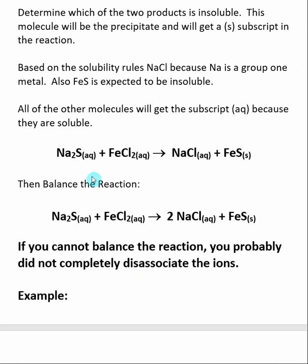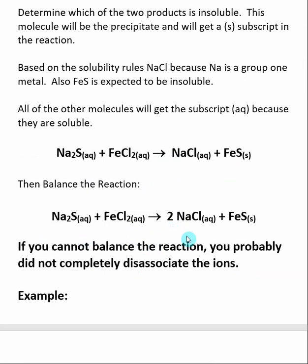The next step is to balance the reaction. We have taken our reactants, recombined them to make products, and now we balance. Here, all we need to do is place a stoichiometric coefficient of 2 in front of sodium chloride. We have discussed how to balance these reactions in previous sections. One thing to remember: if you have trouble balancing and it seems like the reaction cannot be balanced, you have likely made a mistake — typically either not dissociating the ions correctly or assigning an incorrect charge to an ion.